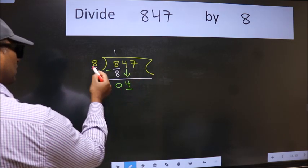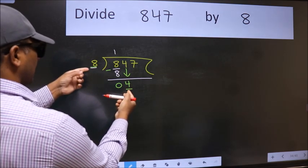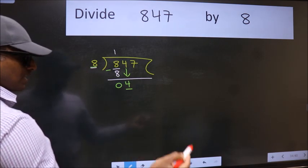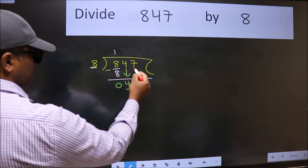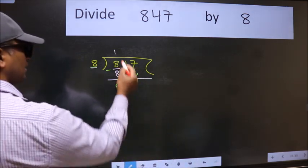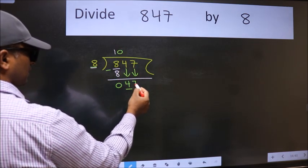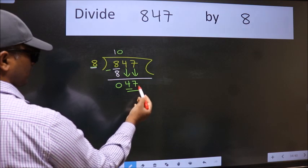Now here we have 4 and here 8. 4 is smaller than 8, so we should bring down the second number. And the rule to bring down the second number is put 0 here. Then only we can bring this number down. So, 47.